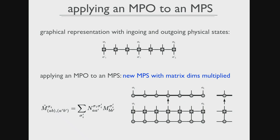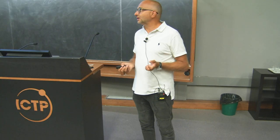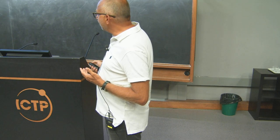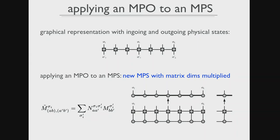For simple local operators like S^z or density, the matrix does not grow. But if you try to work out what a Hamiltonian looks like as an MPO, it will not be such a nice object. So: you give me an MPS, I give you an operator, we apply it to the state and have a new state — standard quantum mechanics — but the dimension has grown. Do this a few times and your computer starts throwing up. So what do we have to do?